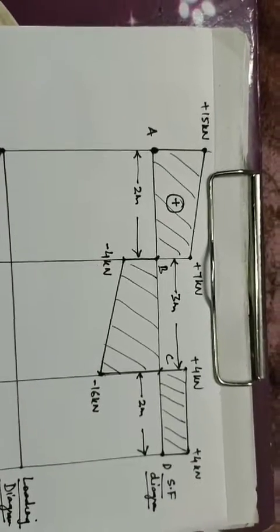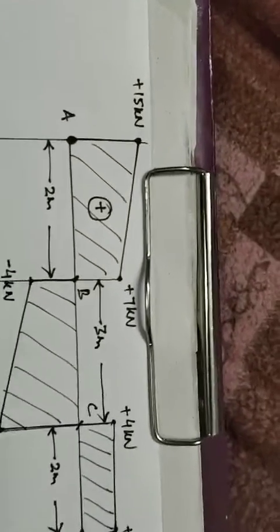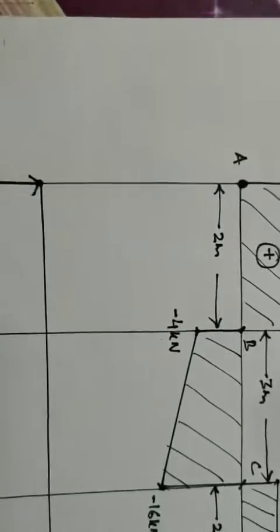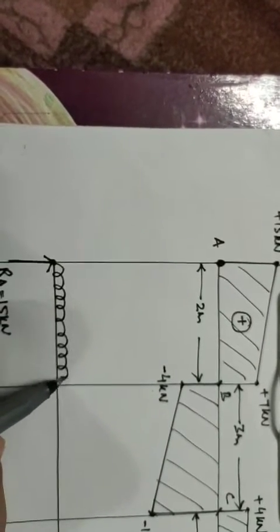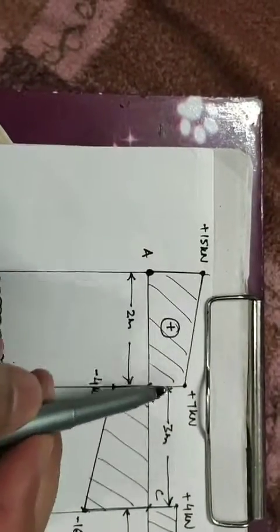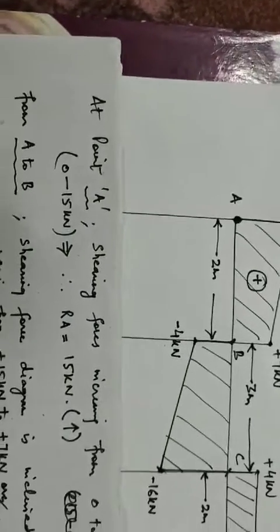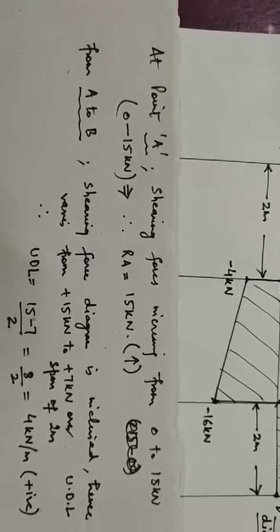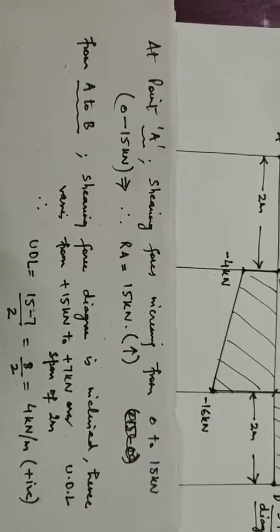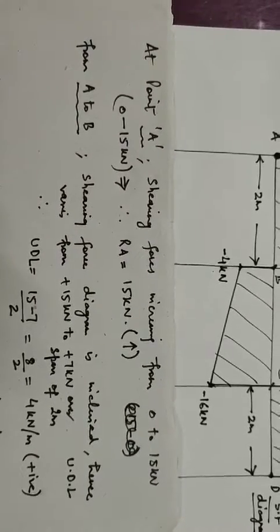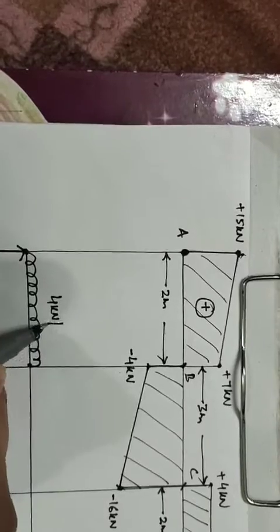From point A to B, there is an inclined shear force diagram. An inclined line represents that there will be a UDL from point A to B. The change in load from A to B is 15 minus 7, which is 8, acting over a span of 2 meters. So UDL equals 8 divided by 2, which is 4 kilo Newton per meter from point A to B.